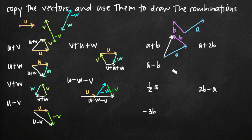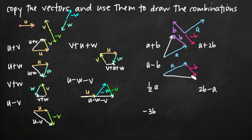For a minus b, we draw a, then negative b — the same vector but in the opposite direction — and attach it to a. That gives us a minus b. For one half a, it's the vector a in the same direction but with half the magnitude. So we draw it half the length and call it one half a.